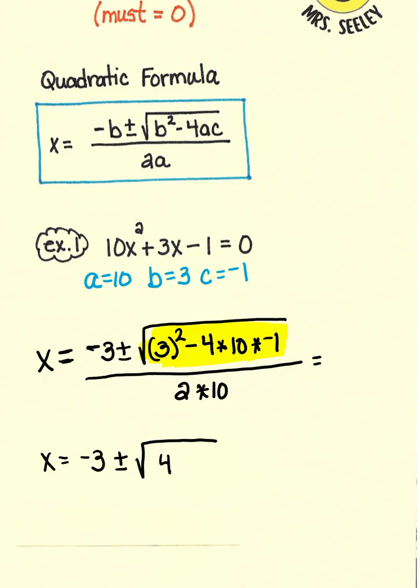In this particular case, that's equivalent to 49 under the square root house, all over 20.